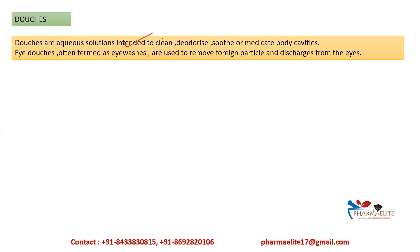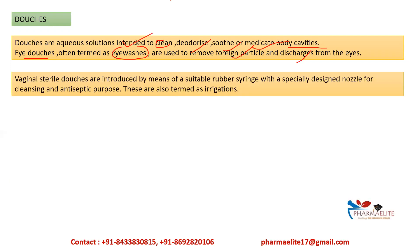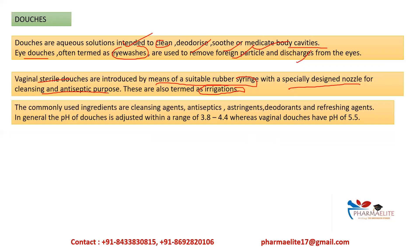Douches are aqueous solutions intended to clean, deodorize, soothe, or medicate body cavities. Eye douches are also called eye washes and are used to remove foreign particles and discharges from the eye. Vaginal sterile douches are also called irrigations and are introduced by means of a suitable rubber syringe with a specially designed nozzle for cleansing and antiseptic purposes. Common ingredients in douches include cleansing agents, antiseptics, astringents, deodorants, and counterirritant agents. The pH of douches is within the range of 3.8 to 4.4.